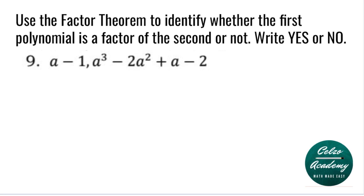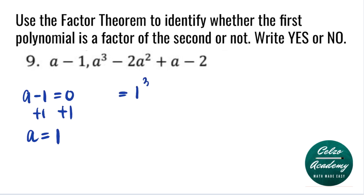Question 9: a minus 1 and a cubed minus 2a squared plus a minus 2. Our a value is equal to 1 because we set a minus 1 equal to 0. Adding 1 to both sides, our a value is 1. Using the factor theorem, we substitute 1 into our second polynomial. We will have 1 to the third minus 2 times 1 squared plus 1 minus 2. If the answer is 0, this means a minus 1 is a factor.